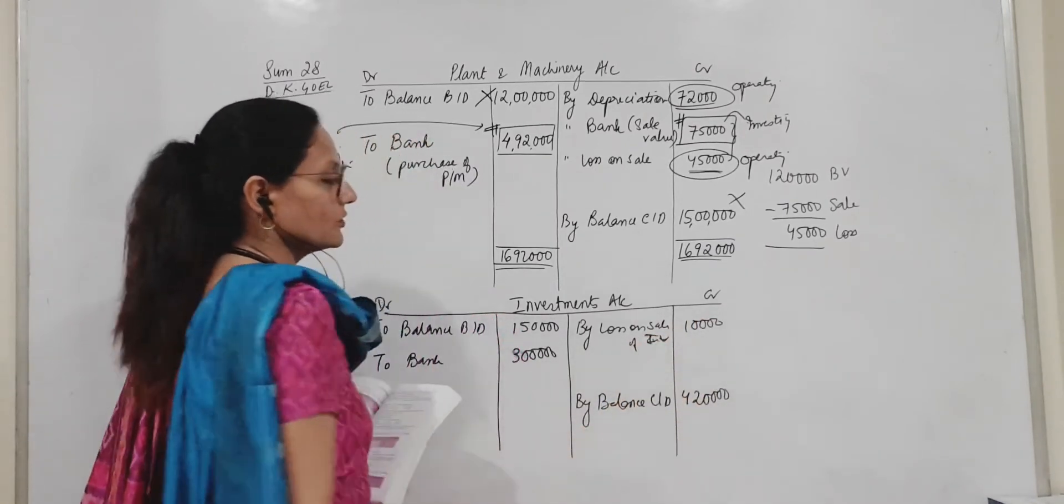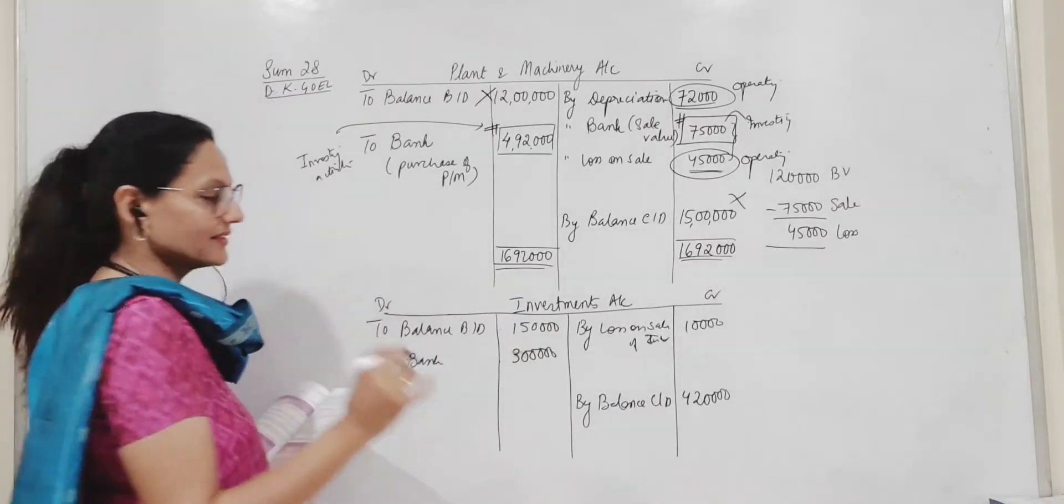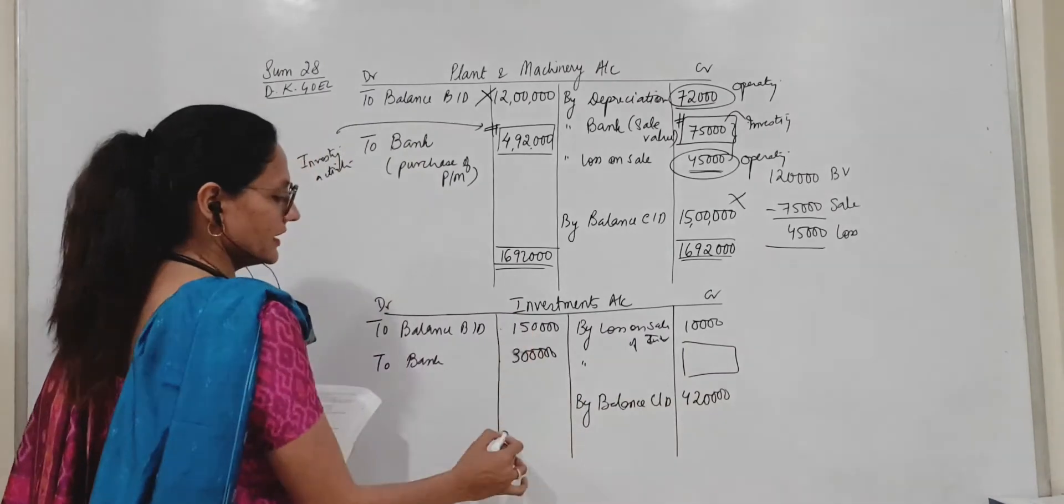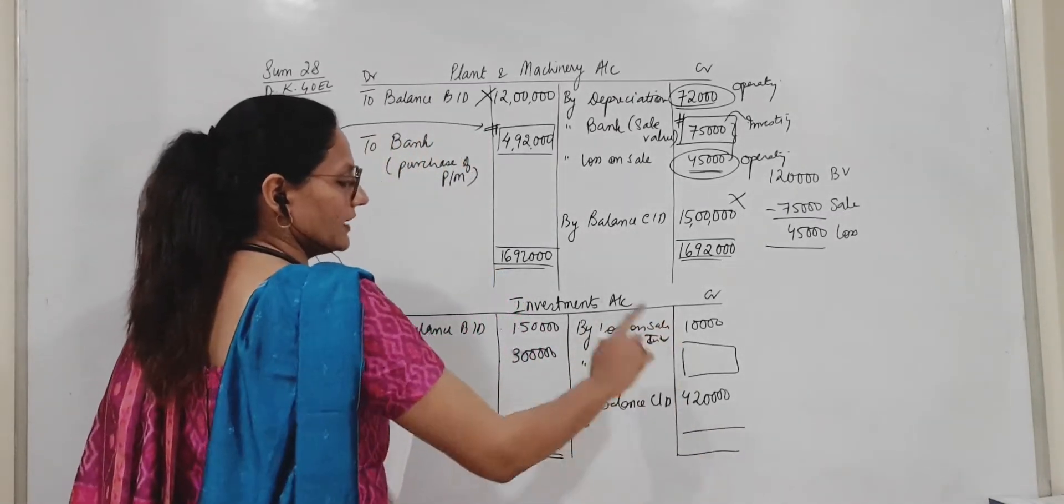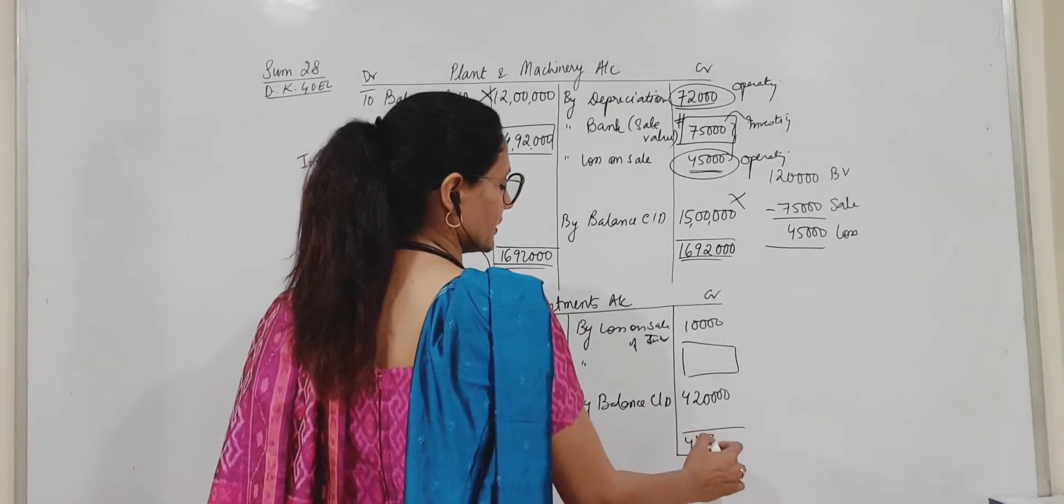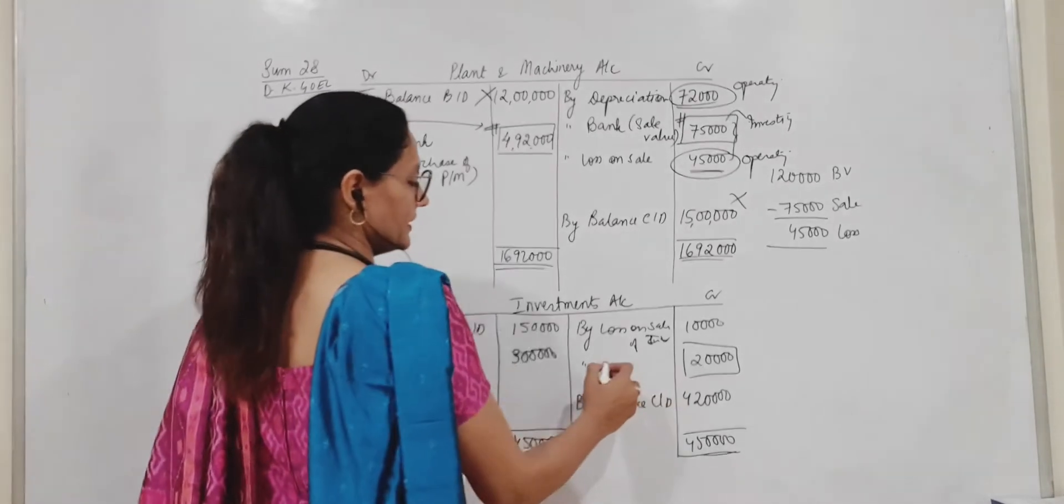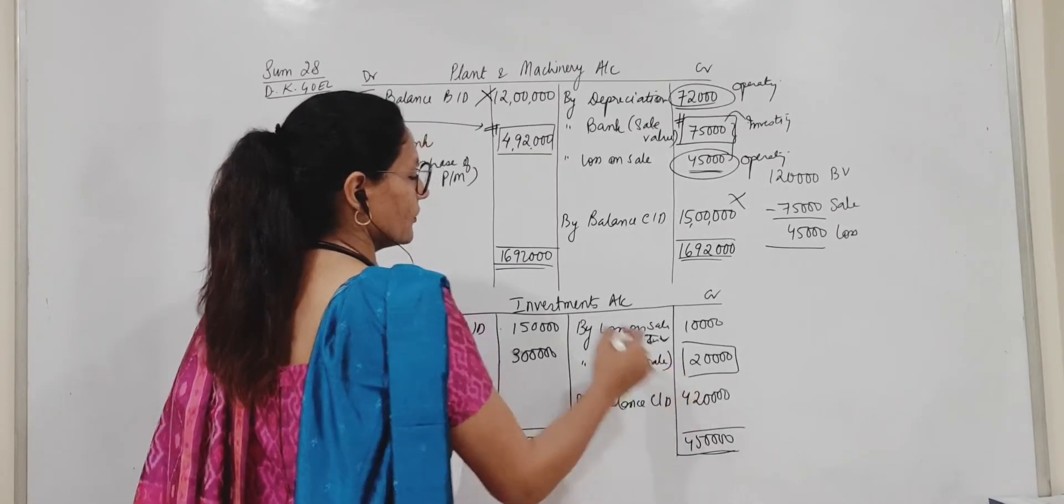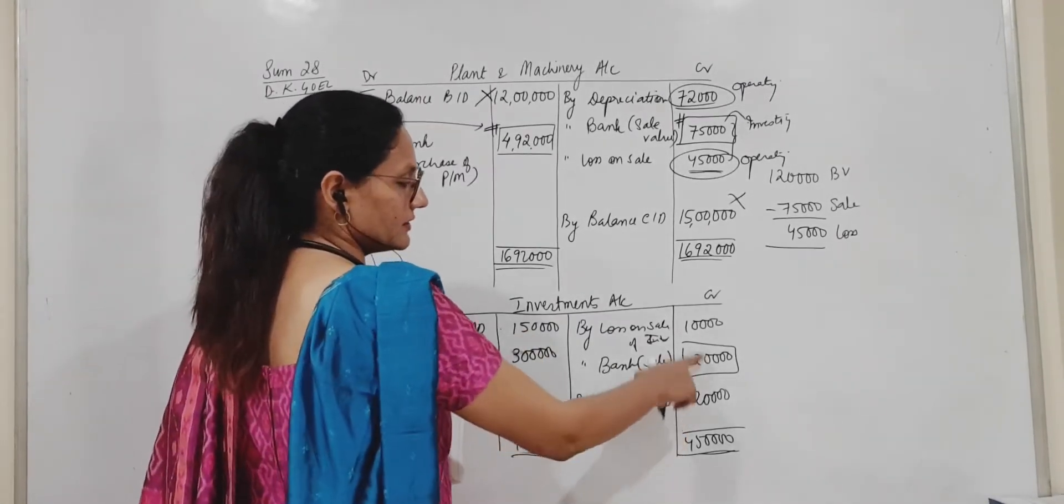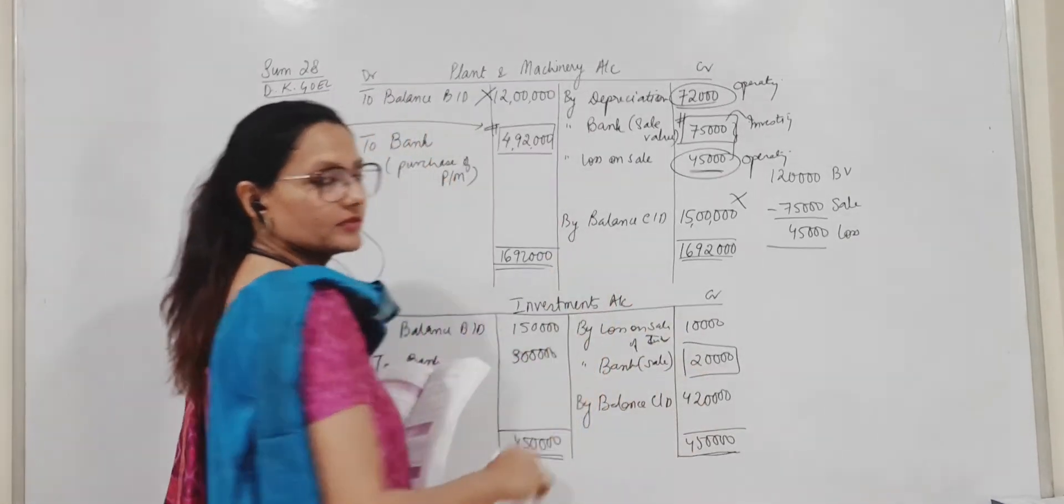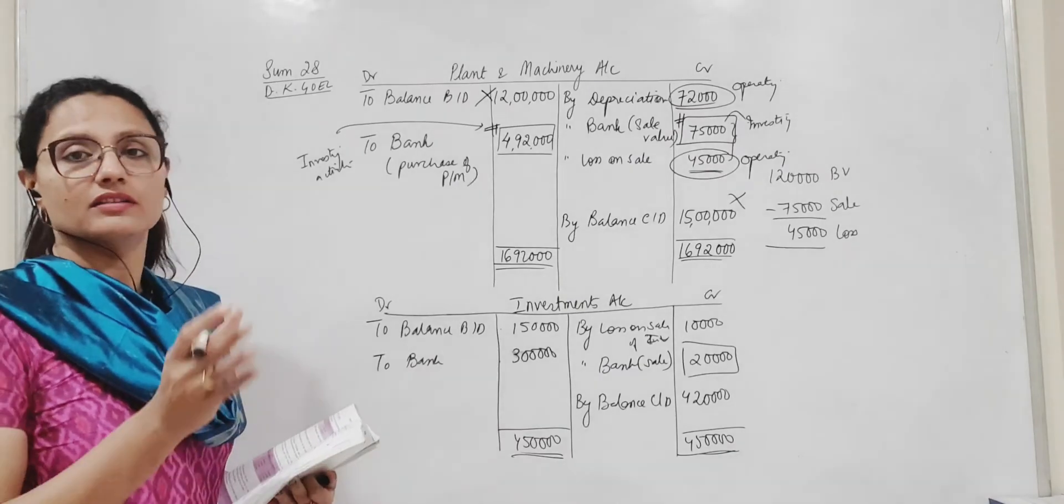Now everything is done. Opening, closing, purchase figure. Obviously there is no depreciation on investments. So whatever is the balancing figure on the credit side. This side is coming to 4,50,000. And the other side, it is coming only to 4,30,000. To close my account I will have to put 20,000 here. If I put 20, I will put bank here. This is the sale of investment. I have sold investments for 20,000, loss of 10,000. So this is how we find out the sale proceeds. Same thing here.